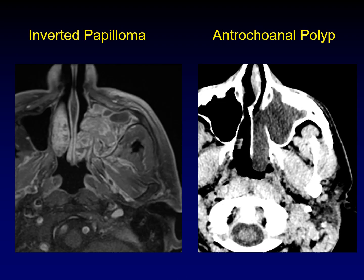Back to the key images: this is the cerebriform enhancement of an inverted papilloma, and this is the flowing extent of an antrochoanal polyp. They're in the same location and have the same basic shape, but they're very different lesions.